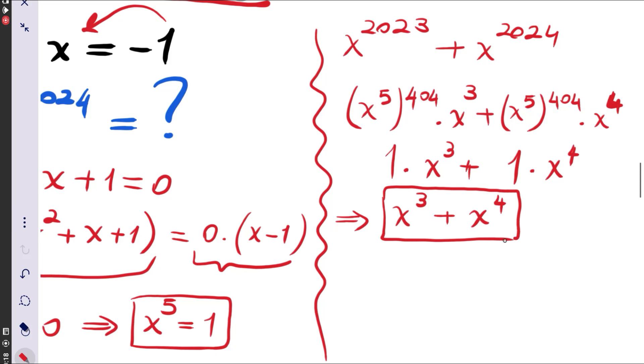This is a simpler version of the given expression but it's not the simplest. Now remember we have x to the 4, x cubed, x squared, x, and 1 is equal to 0. Then we can write x to the 4 plus x cubed is equal to minus x squared minus x and minus 1, and this is our final result.